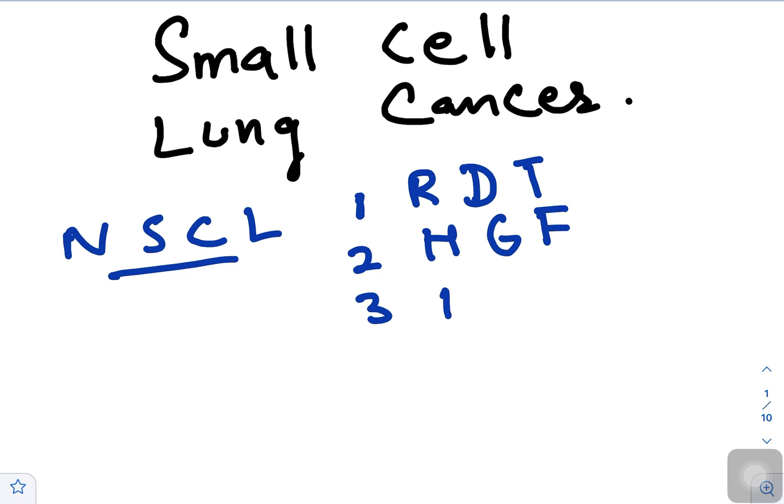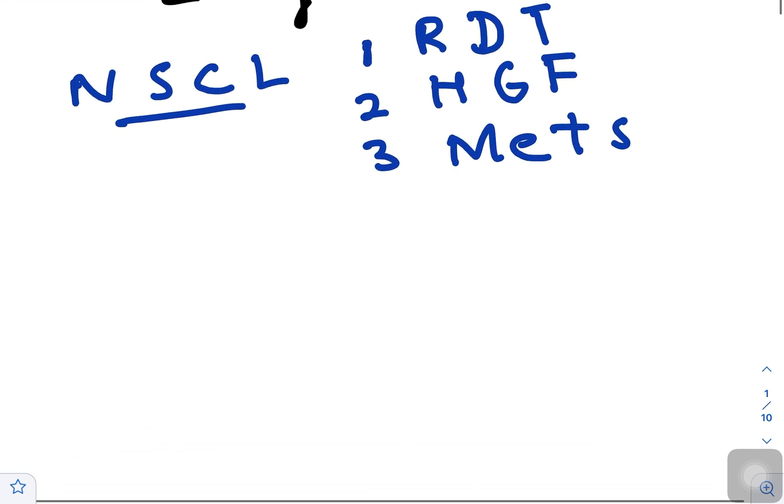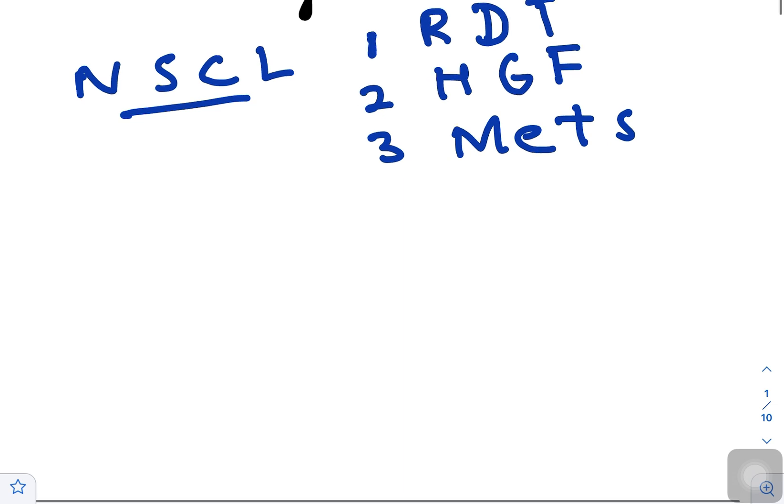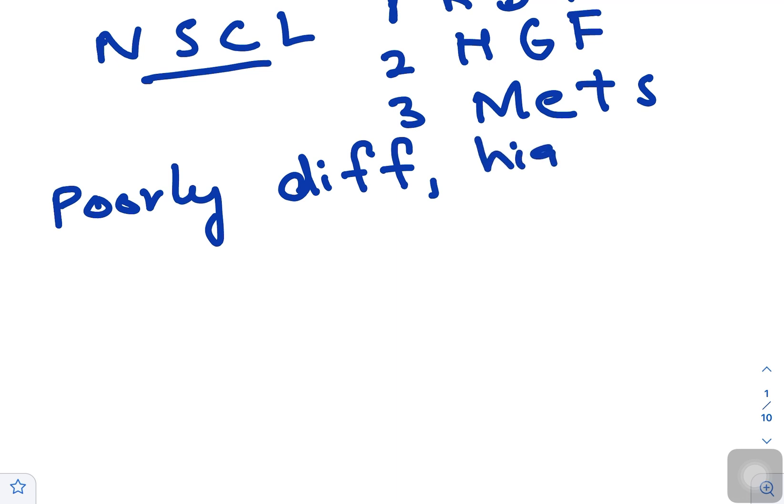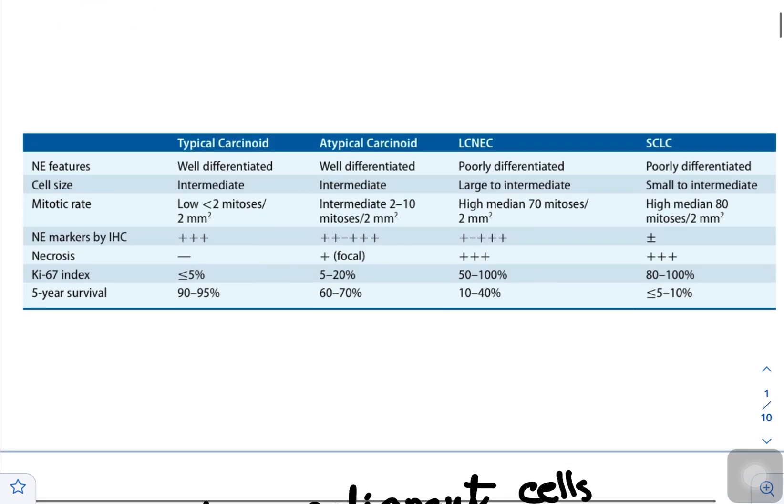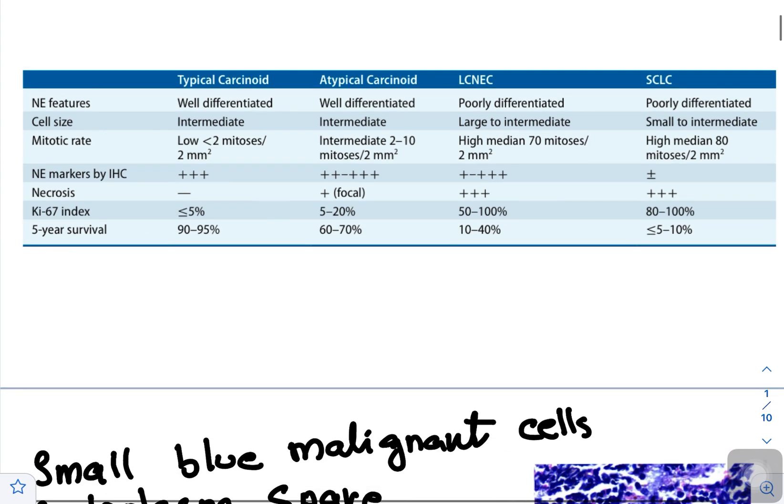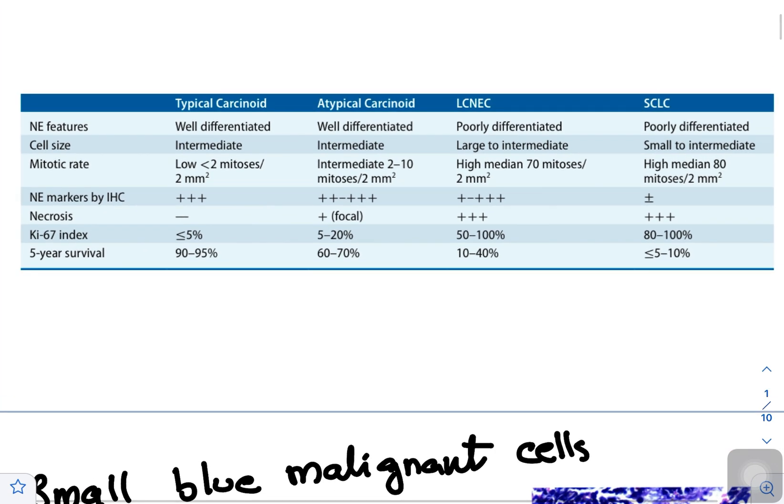How to define small cell lung cancer? It is basically a poorly differentiated, high-grade neuroendocrine carcinoma which needs to be differentiated from other neuroendocrine cancers.